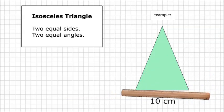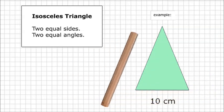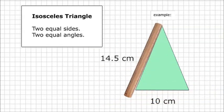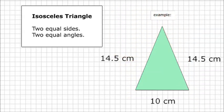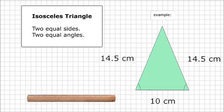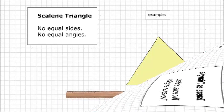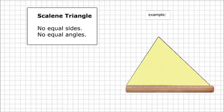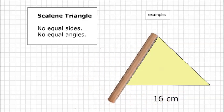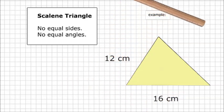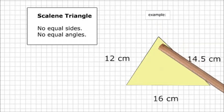Isosceles Triangle: It has two equal sides and two equal angles. Scalene Triangle: It has no equal sides and no equal angles.